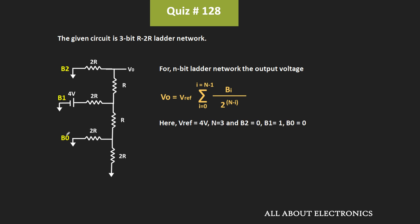Here V_reference is equal to 4V, the number of bits is equal to 3, and the values of bits B2, B1, and B0 are 0, 1, and 0 respectively. Putting all the values into the expression, the output voltage Vout equals 4 times (0 plus 1/4 plus 0), which gives an output voltage equal to 1V.